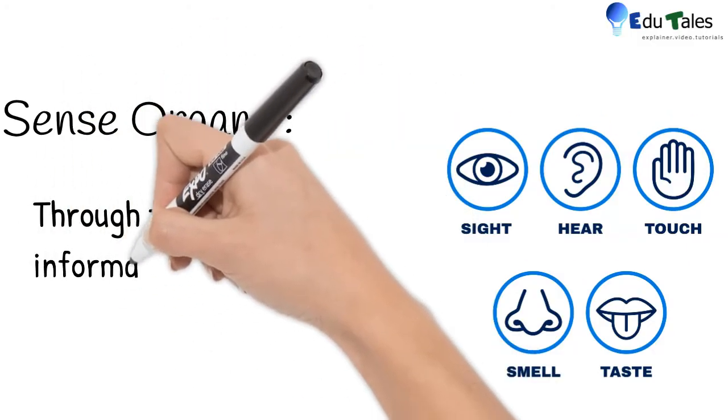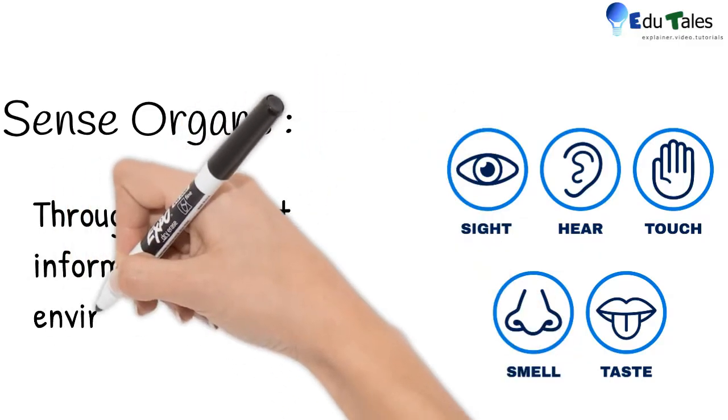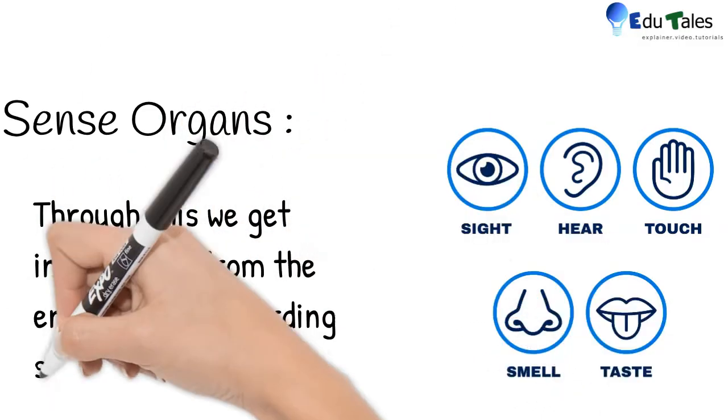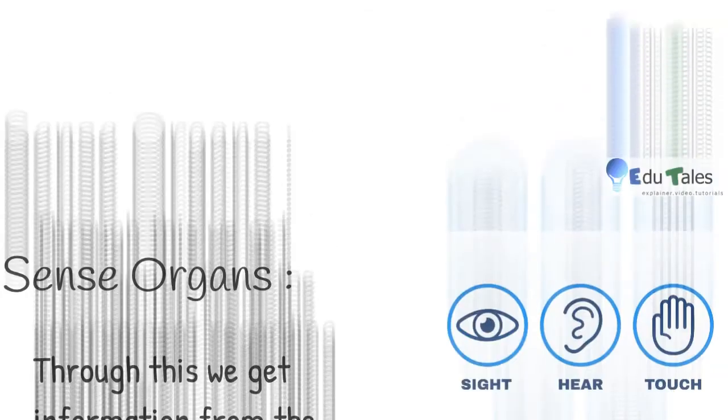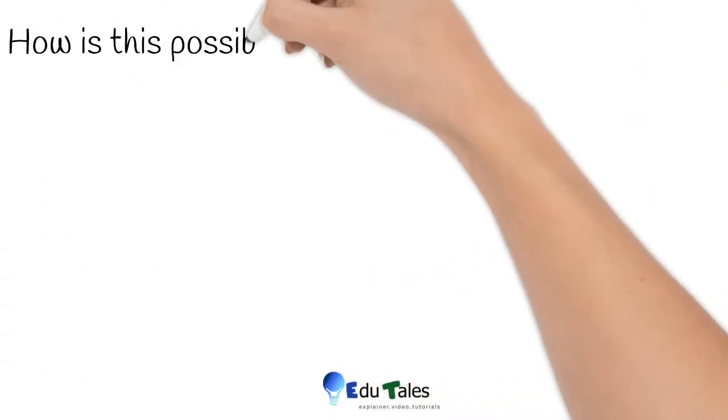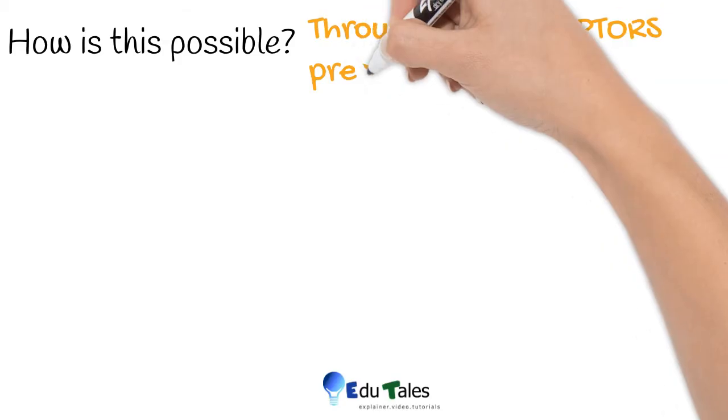Through them we get information from the environment regarding stimulus. How is this possible? Through the presence of receptors on the sense organs.